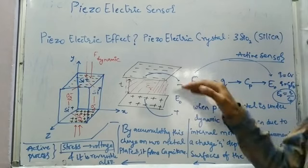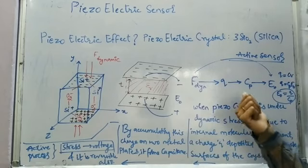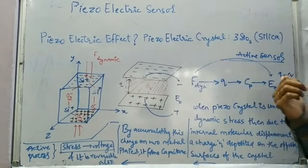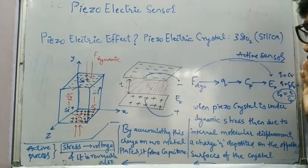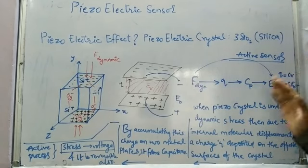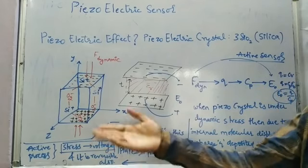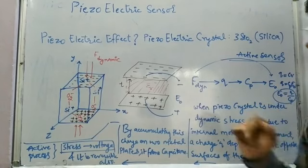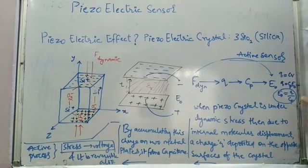By accumulating this charge on two metal plates, we form capacitance CP (piezoelectric capacitance). That capacitance, together with the charges, provides output voltage using the relation Q = CP × E0. So E0 = Q / CP.